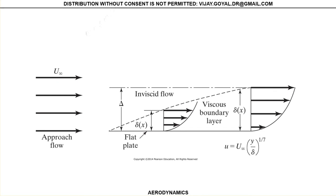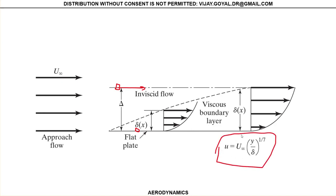Going back to the textbook picture: the region far from the surface is inviscid flow because nothing is sticking. As you get closer, the boundary layer is a viscous flow. A particle far from the surface keeps moving without touching, while a particle in the boundary layer is in full contact, creating viscous flow. The velocity gradient in the boundary layer equals this important parameter, which we'll discuss in more detail later.